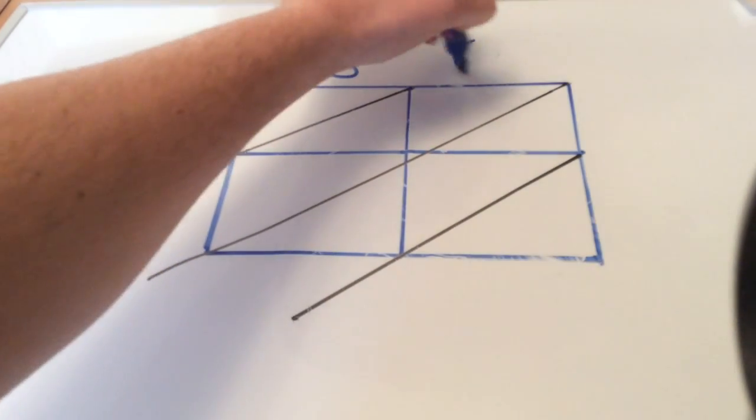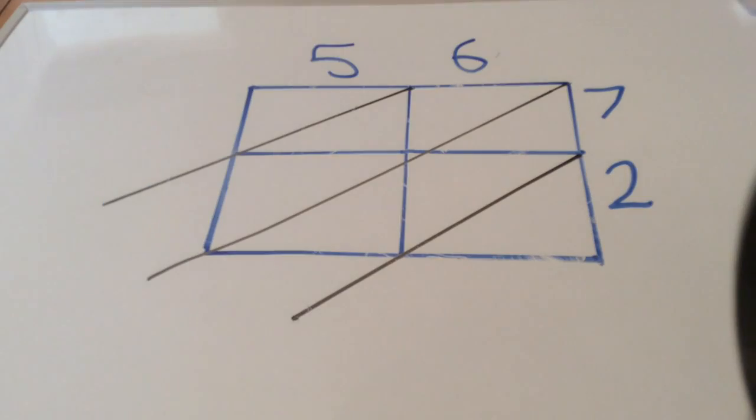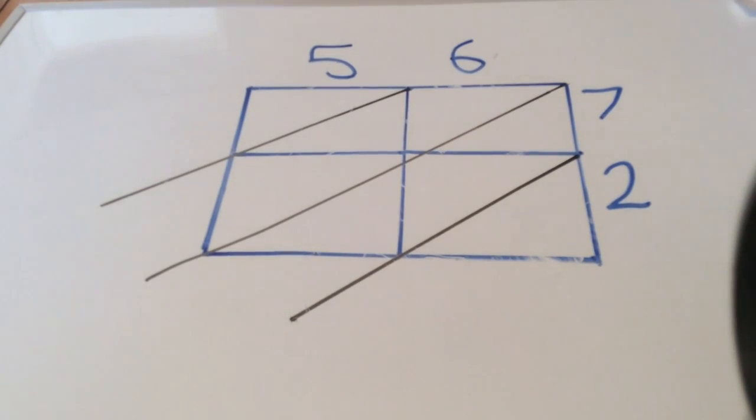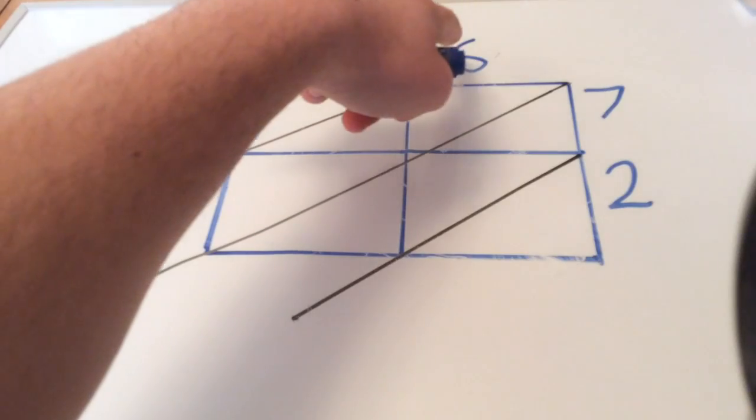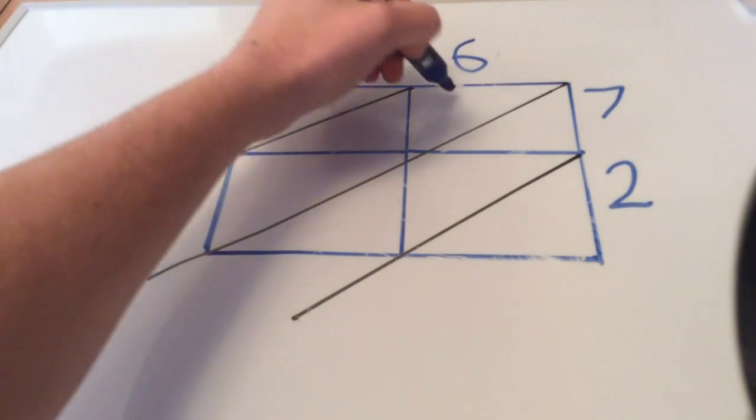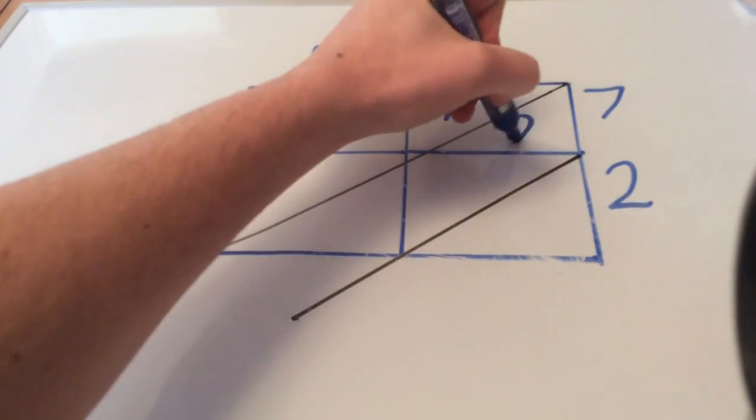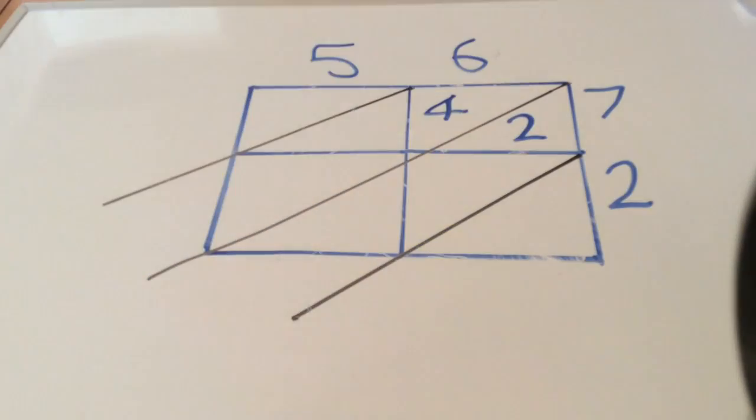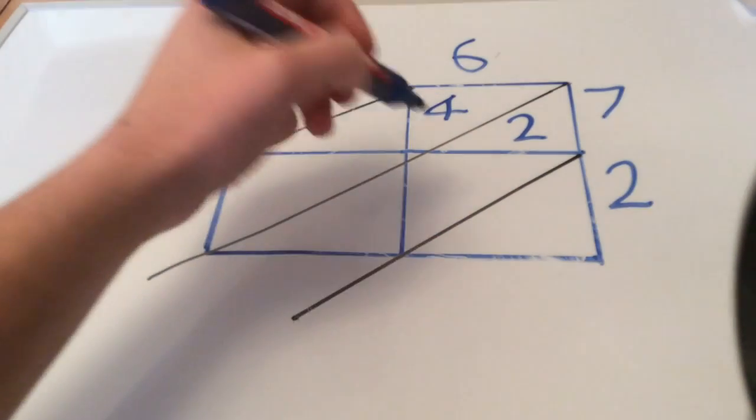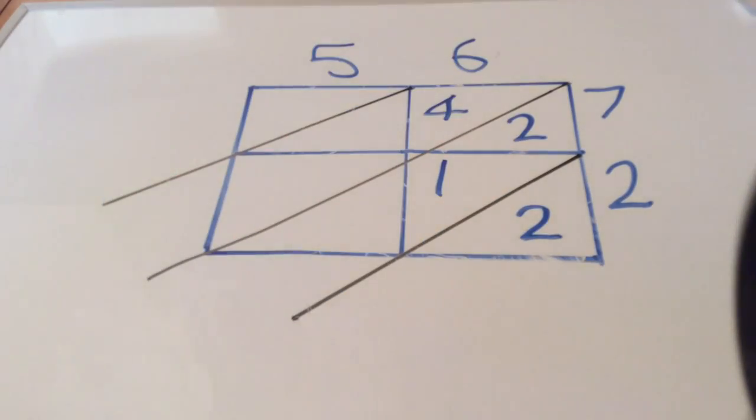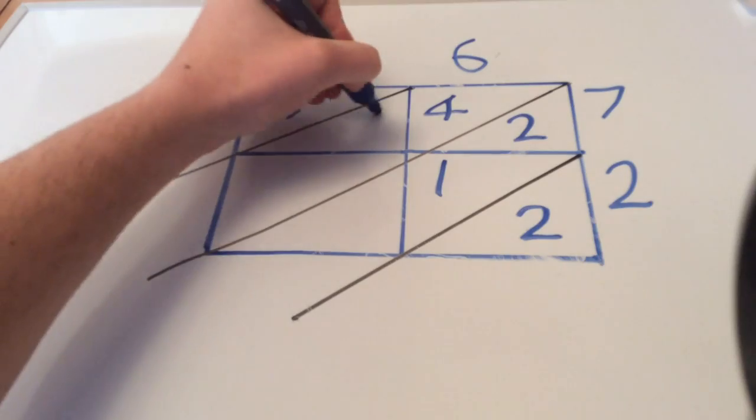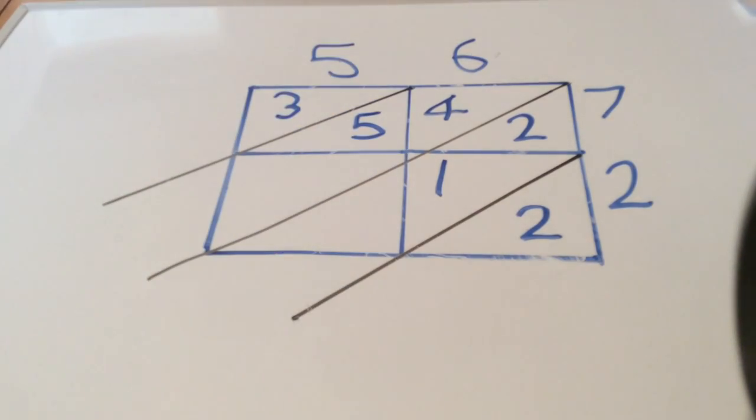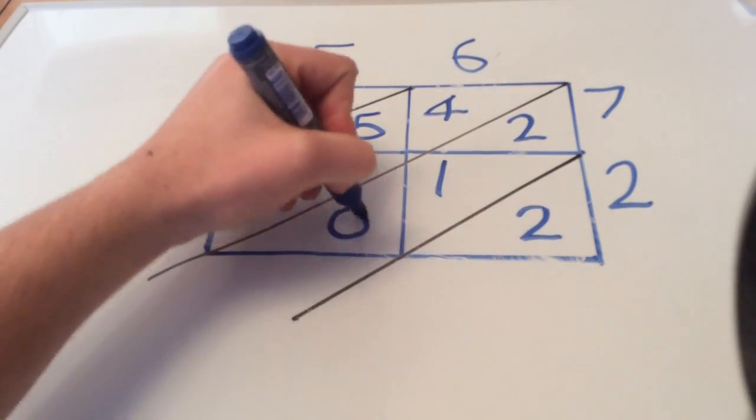56 multiplied by 72. All we need to do is multiply the numbers together. Six times seven is 42, so four tens, two units. Six times two is twelve, one ten, two units. Five times seven is thirty-five, three tens, five units. And five times two is ten, one ten, zero units.